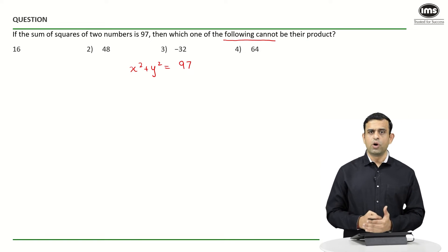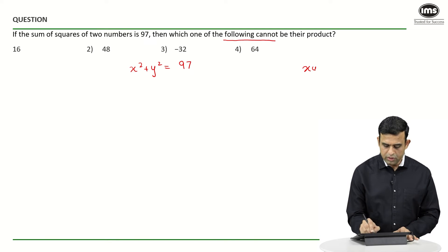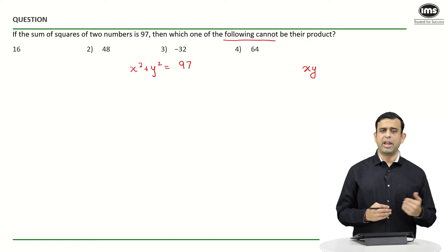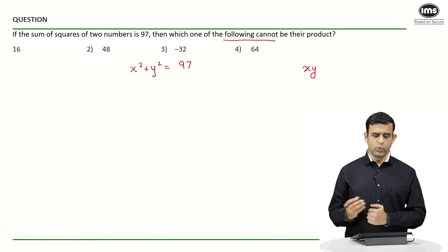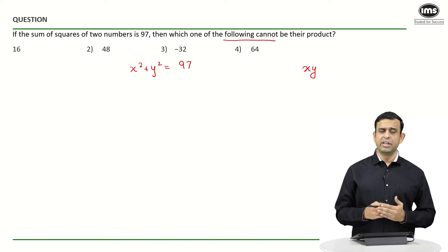Again, definitely there can be multiple possible ways in which you can find x² + y² to be equal to 97. If people think on the lines of integers, they might say okay, the number x could be 9 and y could be 4, because 81 + 16 happens to be nothing but 97.